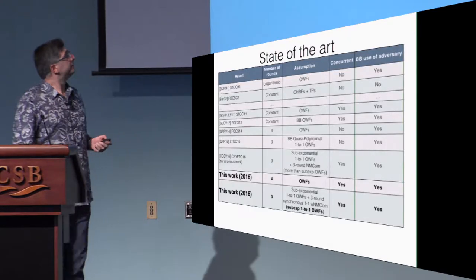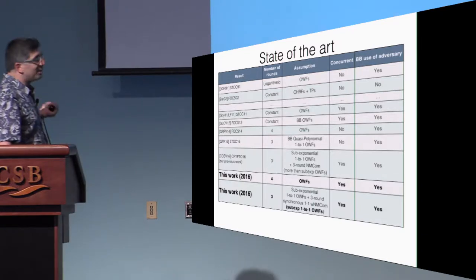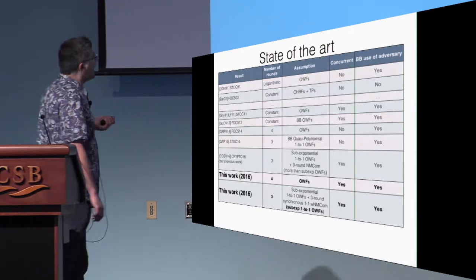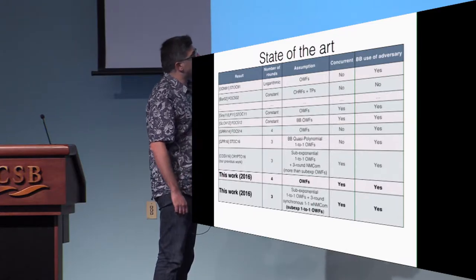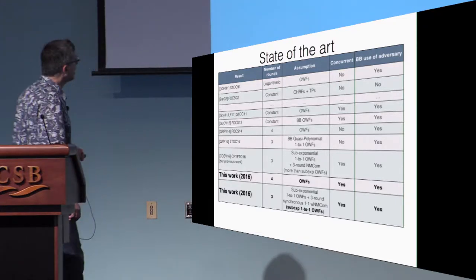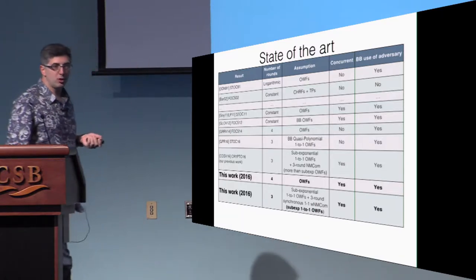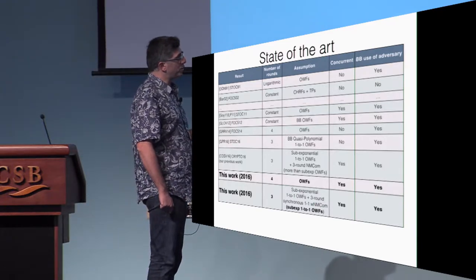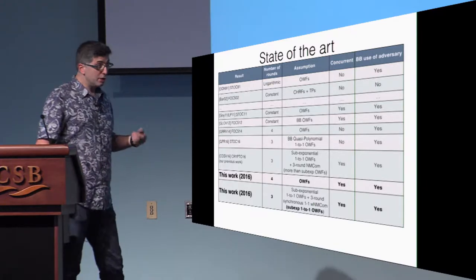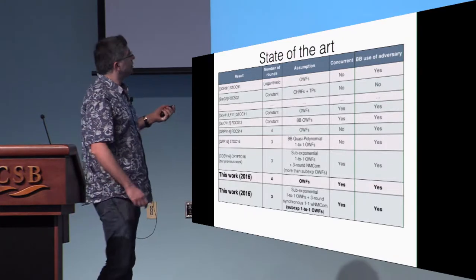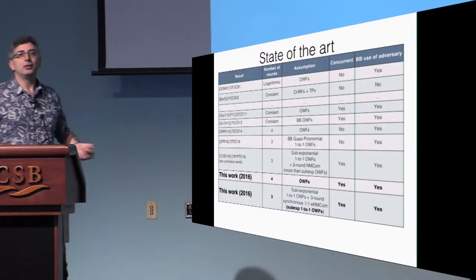This is the state of the art after our work. Non-malleability for commitments is a very old problem, with work over the years improving round complexity, complexity assumptions, and concurrency. We end up with very nice properties: it is concurrent, requires only minimal assumptions — just one-way functions — and achieves it in four rounds. Our work was online already in 2016, and we also have the three-round construction based on sub-exponentially secure one-to-one one-way functions.